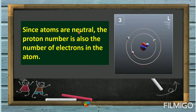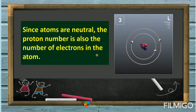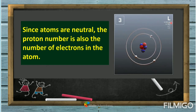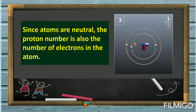Since atoms are neutral, the proton number is also the number of electrons in the atom. For example, the element lithium has three protons and therefore three electrons.